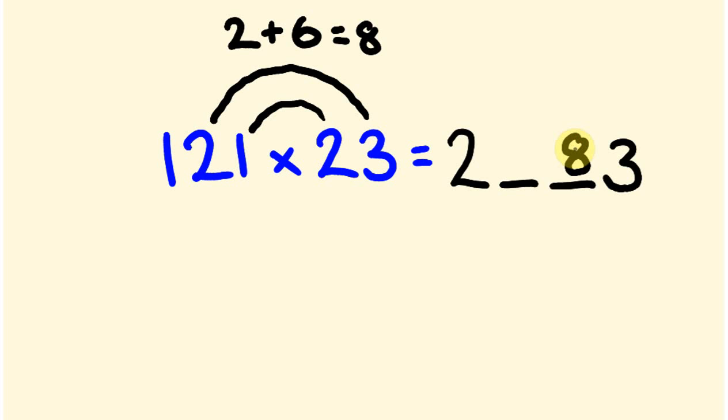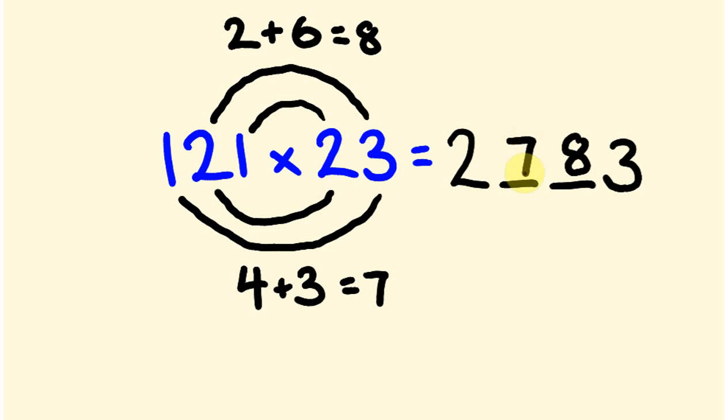To get this number here, the next part of our answer, we're going to do this rainbow multiplication underneath here, but I'm going to move these parts across one. So 2 times 2 and 3 times 1. 2 times 2 is 4, we're going to add that to 3 times 1 which is 3, so 3 plus 4 equals 7. So our answer is 2783, which is the correct answer.